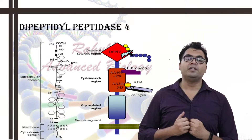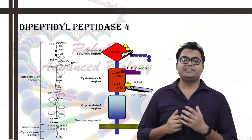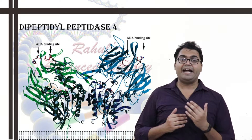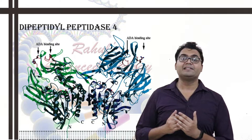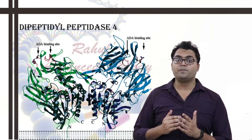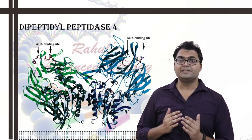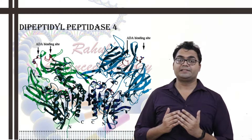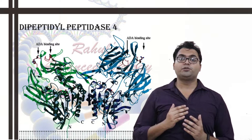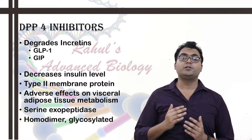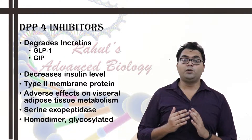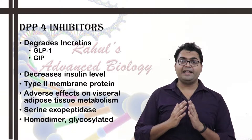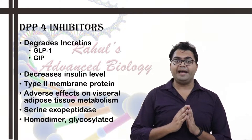What are DPP-4? DPP-4 stands for Dipeptidyl Peptidase-4. It is also known as Adenosine Deaminase Complexing Protein-2, and also known as CD26 — Cluster of Differentiation 26. DPP-4 belongs to the Serine Exoprotease or Exopeptidase family — a type 2 membrane protein which cleaves at the N-terminal end of oligopeptides.